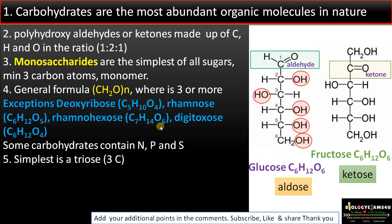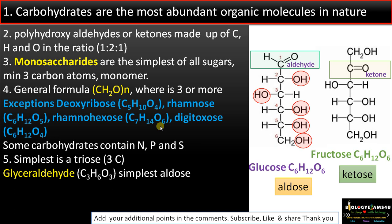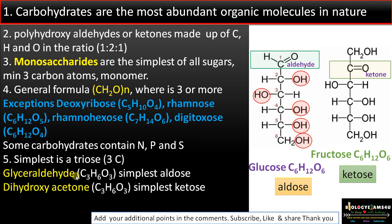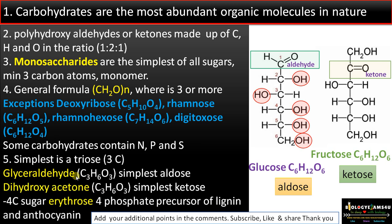Point number five: the simplest carbohydrates are trioses (three-carbon sugars). Glyceraldehyde is the simplest aldose with three carbons, and dihydroxyacetone is the simplest ketose. For four-carbon sugars (tetroses), erythrose-4-phosphate is a precursor of lignin and anthocyanin.